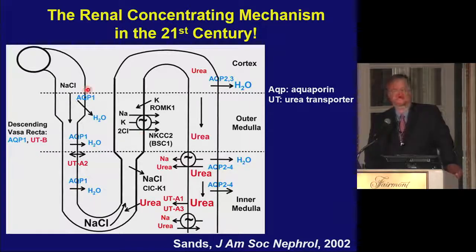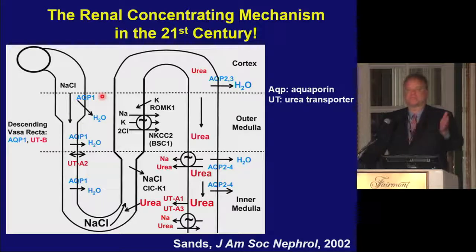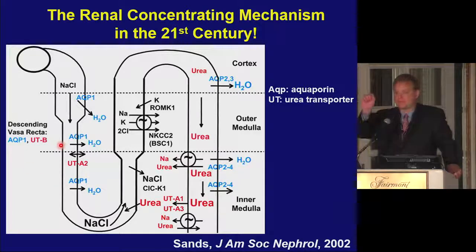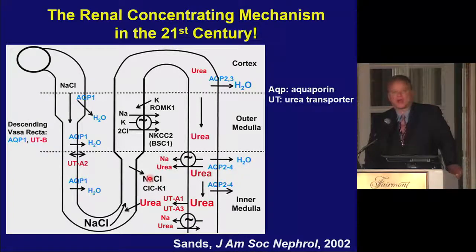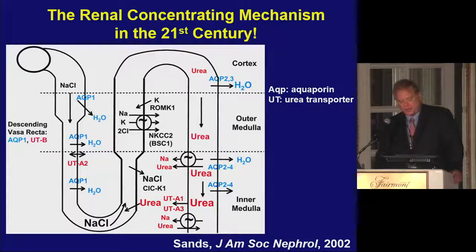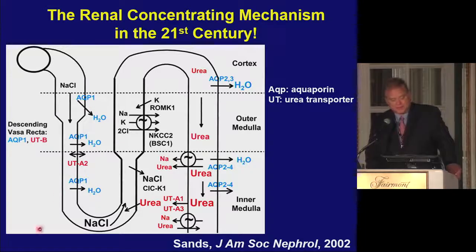The quintessential water channel, aquaporin-1, is expressed at both membranes in the proximal tubule and is a big component of bulk water reabsorption. In the descending thin limb, it's also in both membranes and in the vasa recta. It plays a big role in water exit from the tubule, generating a high lumen sodium chloride concentration. That drives paracellular sodium transport and transcellular chloride transport that's passive in the ascending thin limb, dependent on the chloride channel ClC-K1. Knocking out aquaporin-1 or ClC-K1 in mice produces tremendous nephrogenic diabetes insipidus.